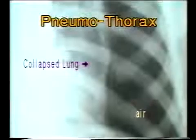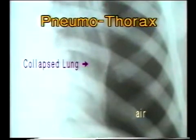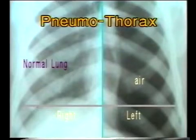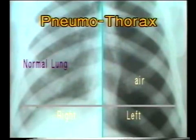Note in the close-up view the absence of bronchovascular markings over the pneumothorax and the sharp border separating it from the lung. Now compare the normal lung on the right side with pneumothorax on the left side. Absence of bronchovascular markings is better appreciated when compared with the normal lung on the opposite side.